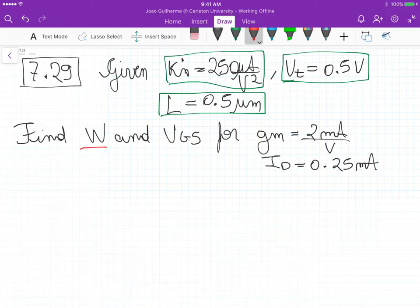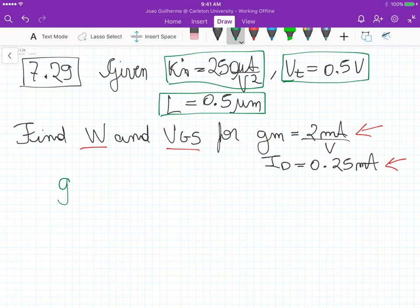We need to find the width and VGS for a transconductance of 2 milliamps per volt and a drain current ID of 0.25 milliamps. So there's one of the equations for the transconductance, gm, equals the square root of 2 times KN' times the aspect ratio times ID.